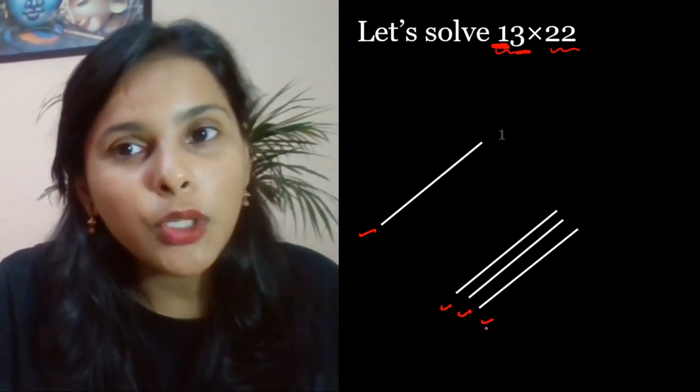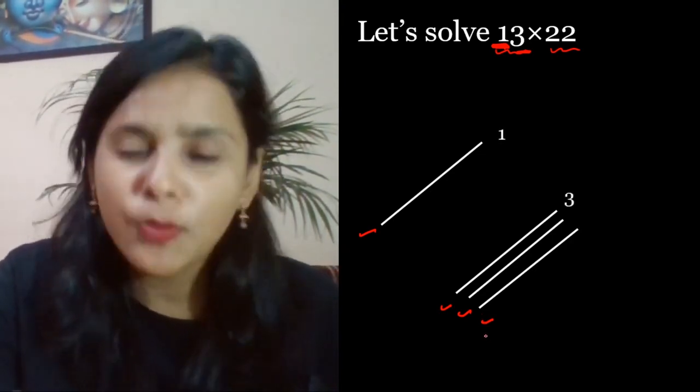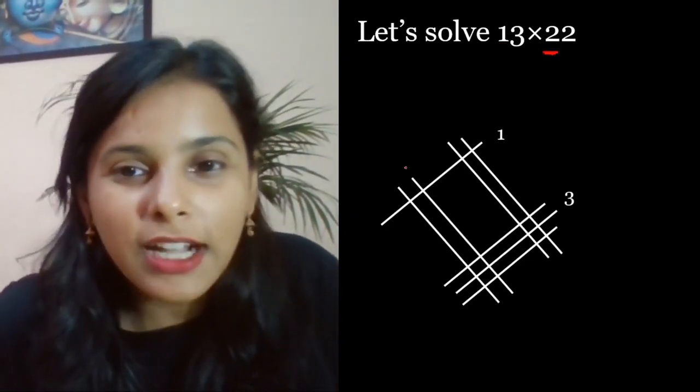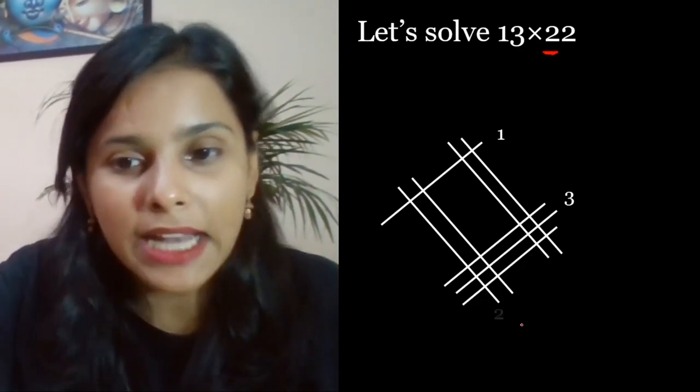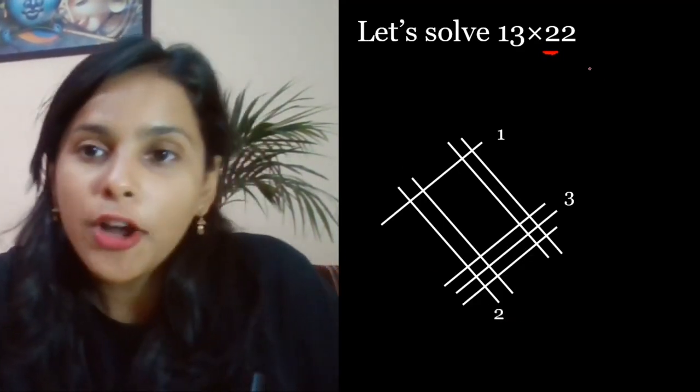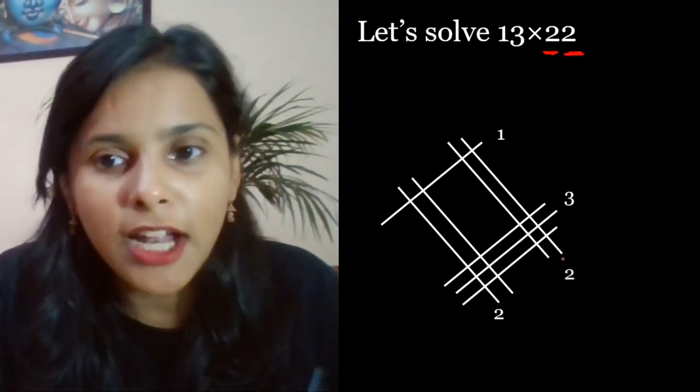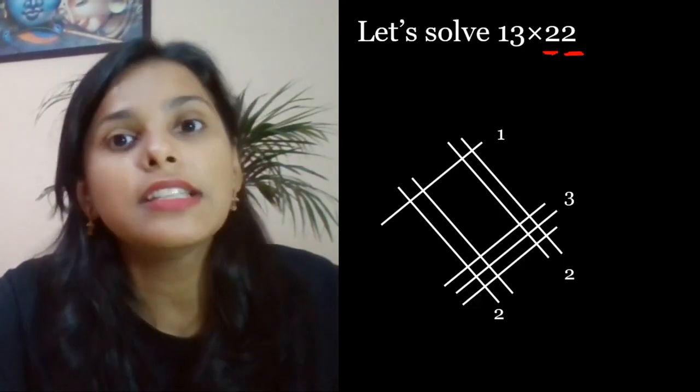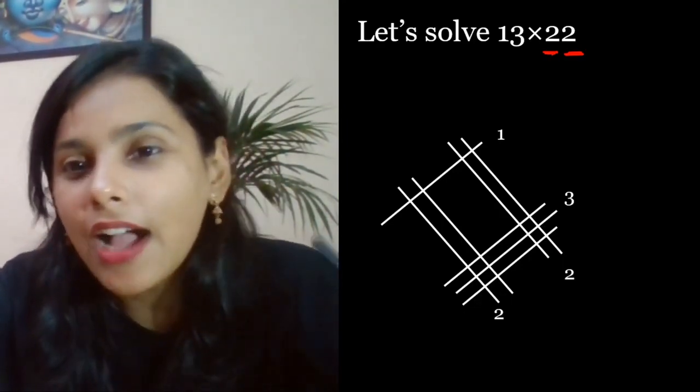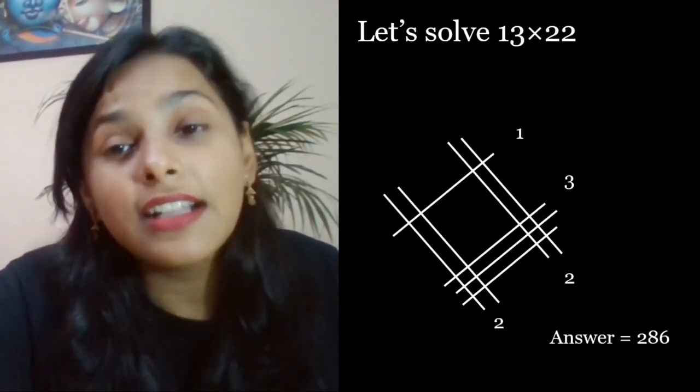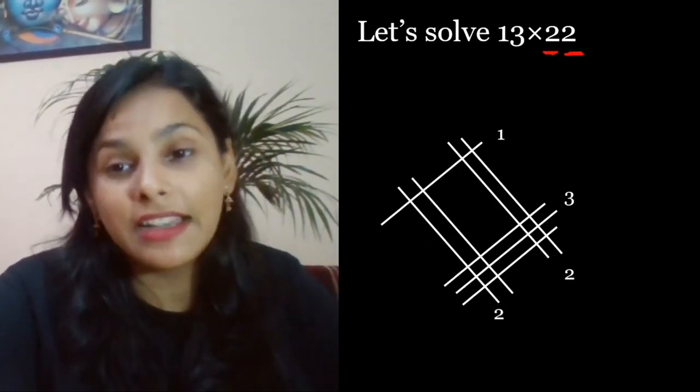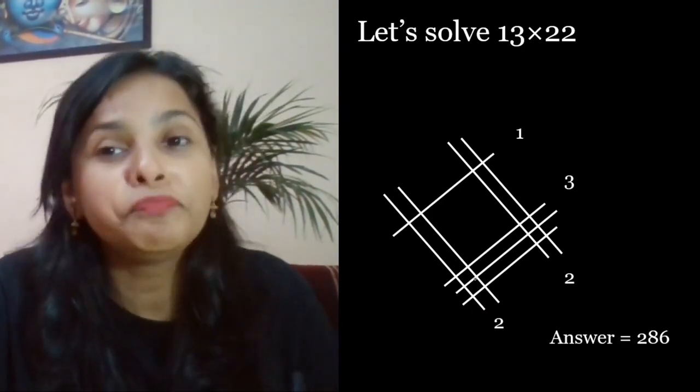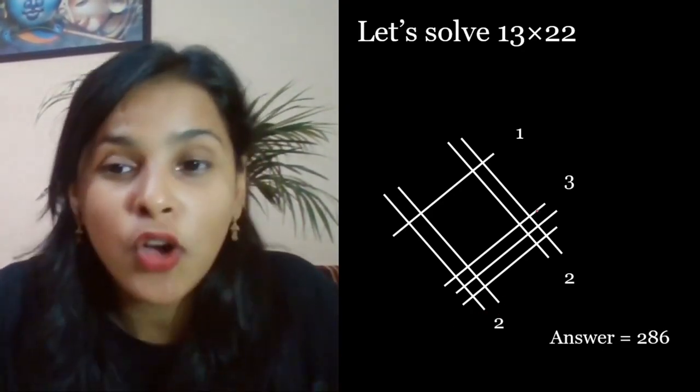The next number is 22. The first number is 2, so make two lines cross. What is the next? 2. Then make 2 lines cross.